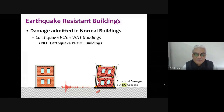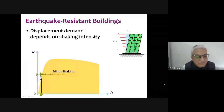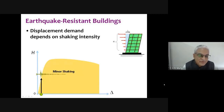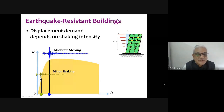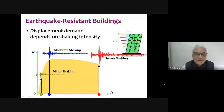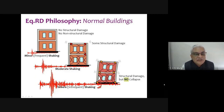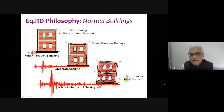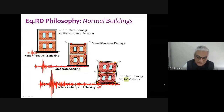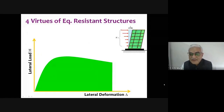Under minor earthquakes, smaller forces are induced and the structure stays linear. Under moderate shaking, it enters non-linear behavior, and under severe shaking it undergoes large non-linear actions. The earthquake resistant design philosophy requires that the structure resist effects at all three levels: no structural damage under minor shaking, some structural damage permitted under moderate shaking, and structural damage is acceptable under severe shaking as long as there is no collapse.